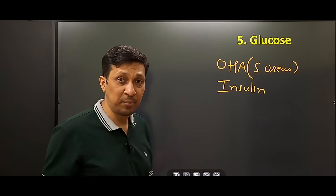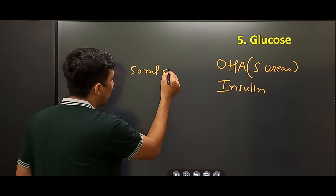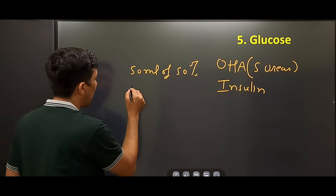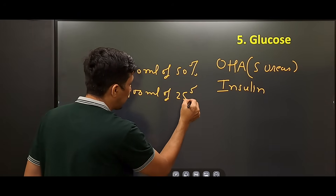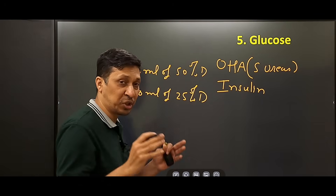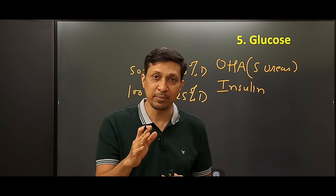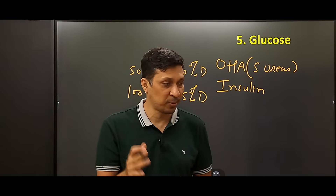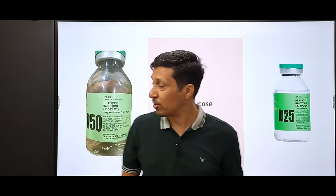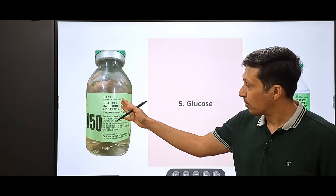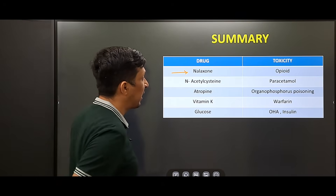When there is hypoglycemia, glucose is given as 50 ml of 50% dextrose or 100 ml of 25% dextrose. Always remember to check the RBS after giving this drug, because if hypoglycemia is not corrected you may need to repeat the dose. It is available as a 100 ml vial of 25% dextrose and also a 100 ml vial of 50% dextrose.